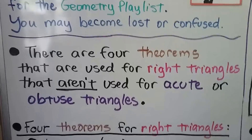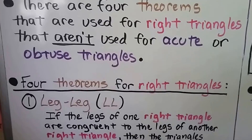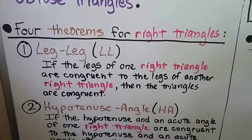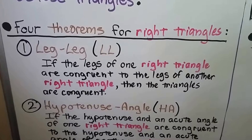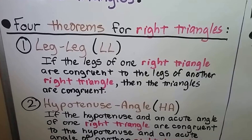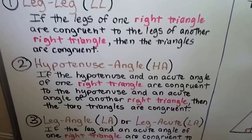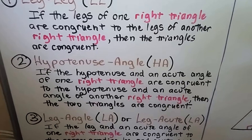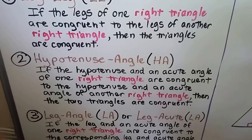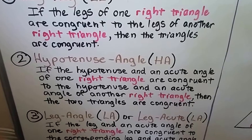There are four theorems that are used for right triangles that aren't used for acute or obtuse triangles. The first one is Leg Leg, that's LL. If the legs of one right triangle are congruent to the legs of another right triangle, then the triangles are congruent. We also have number two, Hypotenuse Angle, that's HA. If the hypotenuse and an acute angle of one right triangle are congruent to the hypotenuse and acute angle of another right triangle, then the two triangles are congruent.